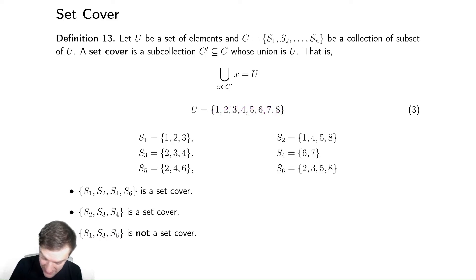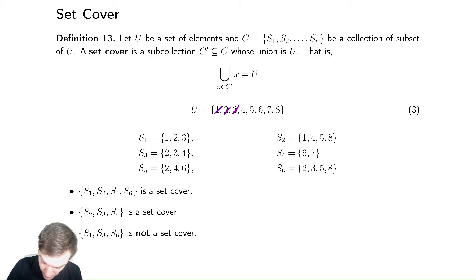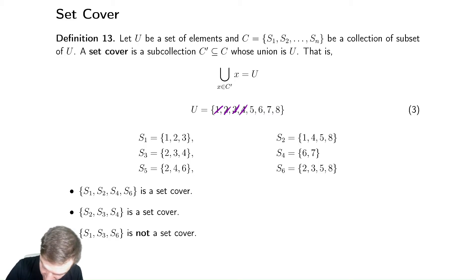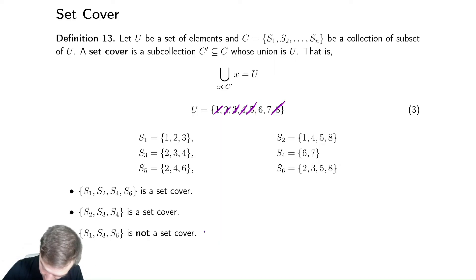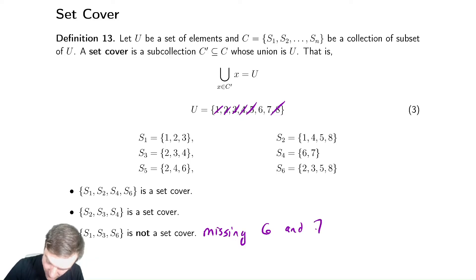Let's check the last one, which is S1, which has 1, 2, 3. S3, which has 2, 3, 4. And S6, which has 2, 3, 5, 8. Notice we don't have 6 or 7 in this cover, so it is not a set-cover — we're missing 6 and 7. So this is what a set-cover is.